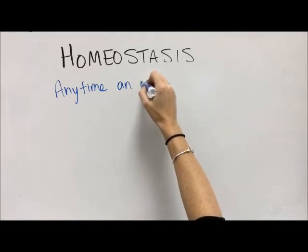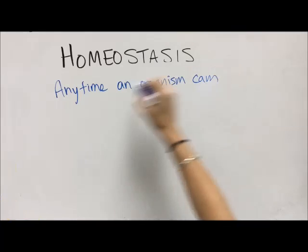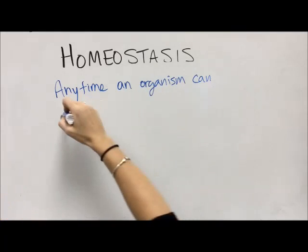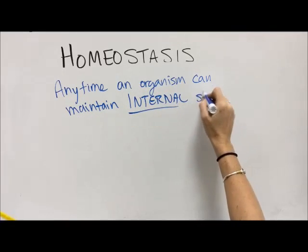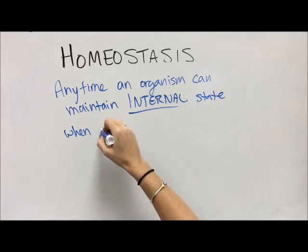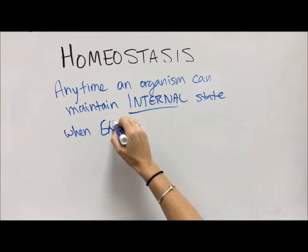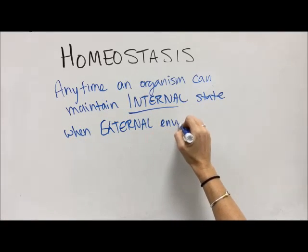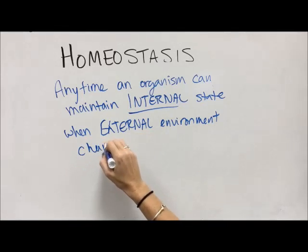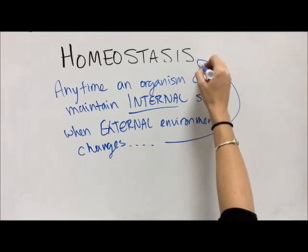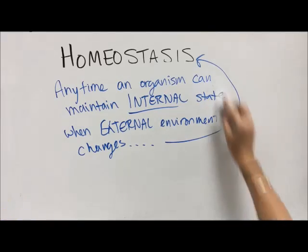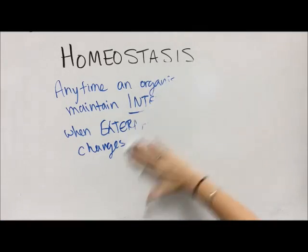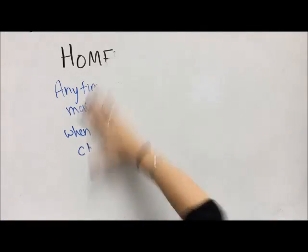Homeostasis is a very important thing for animals to be able to survive. Any time an organism can do something to maintain its internal environment — regardless of what's going on in the external environment, which will change — that is considered homeostasis. We are staying the same inside of our bodies. Those are your examples; hopefully this makes a bit more sense now.